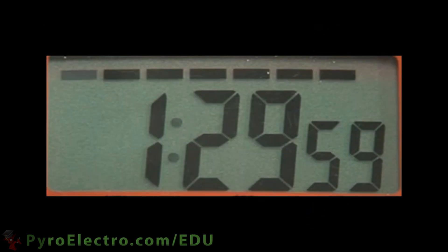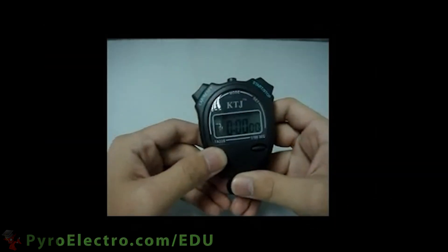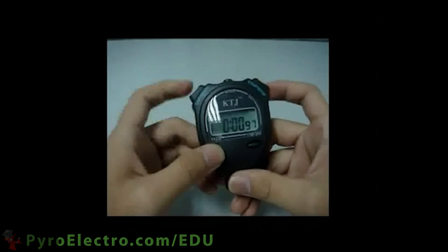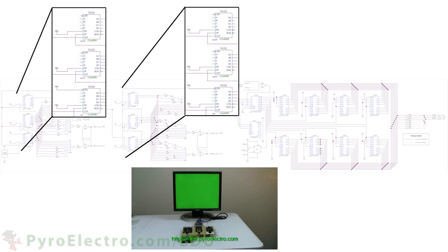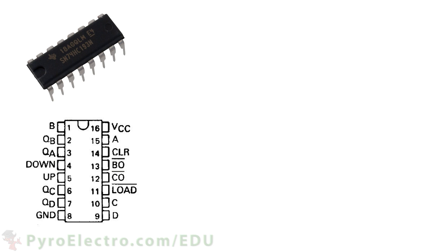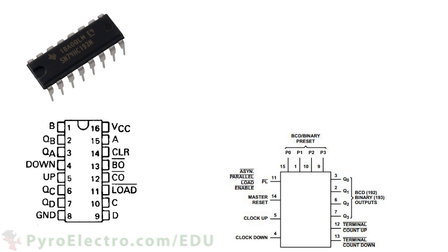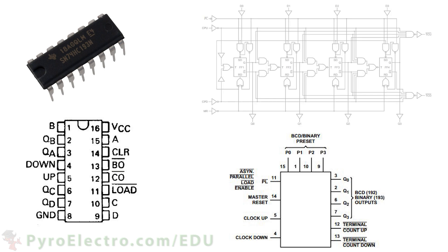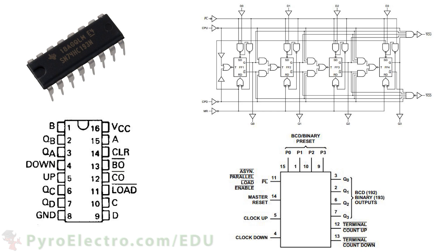In the real world, digital counters are used everywhere — stopwatches, computers, wristwatches, and cell phones are just a few examples. In electronics I have built, like this hardware VGA video card, exact timing was necessary and so digital counters were used. However, like the shift register, we rarely use flip-flops to make our own counters because the 74HC193 already exists — it's a single IC counter with more features. A 74HC193 IC is included in the components kit for you to play with.